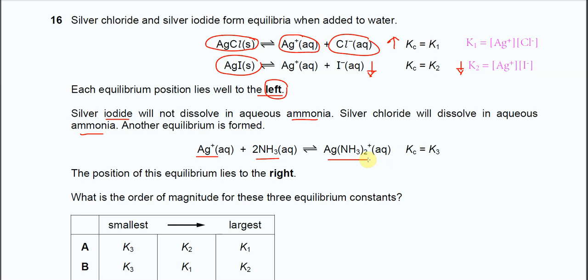It's mentioned the position of this equilibrium lies to the right, meaning it forms the complex ion more. The concentration of the complex ion is relatively higher than the silver ion and the ammonia. That's the meaning of the position of equilibrium to the right.